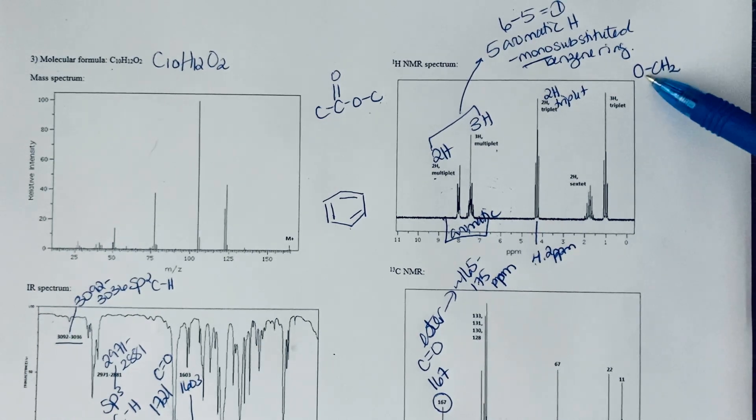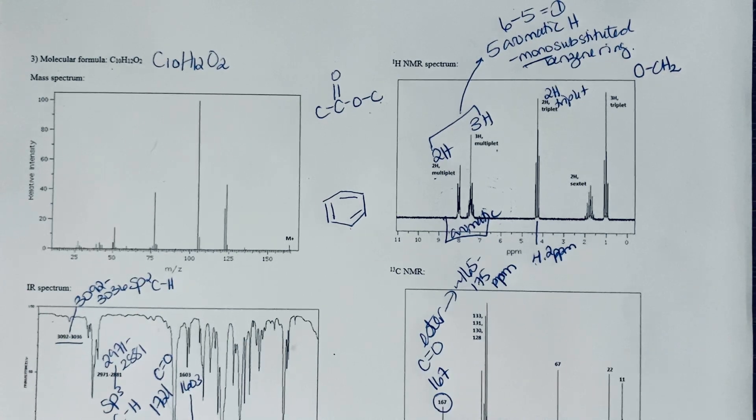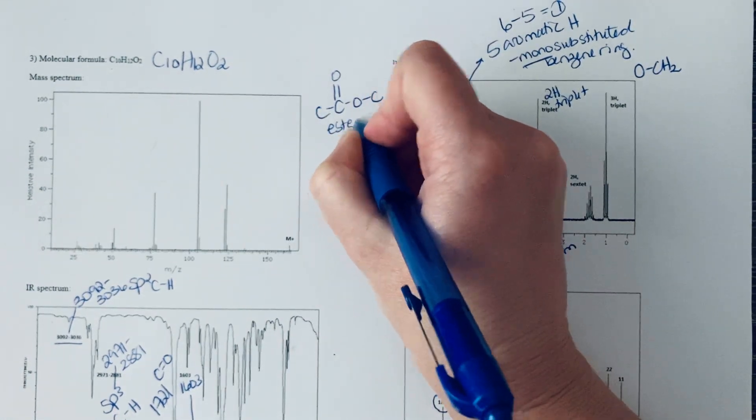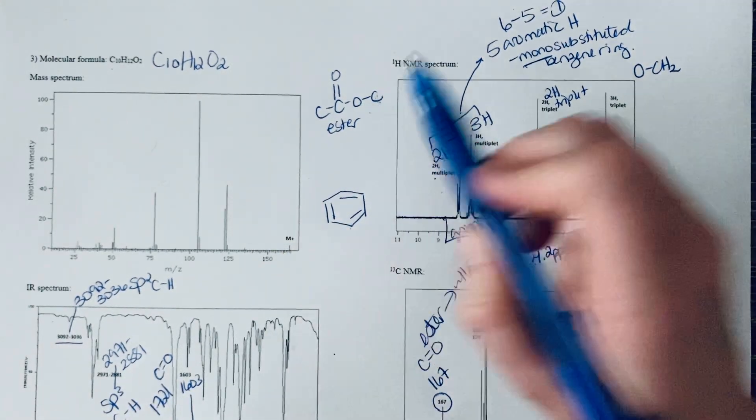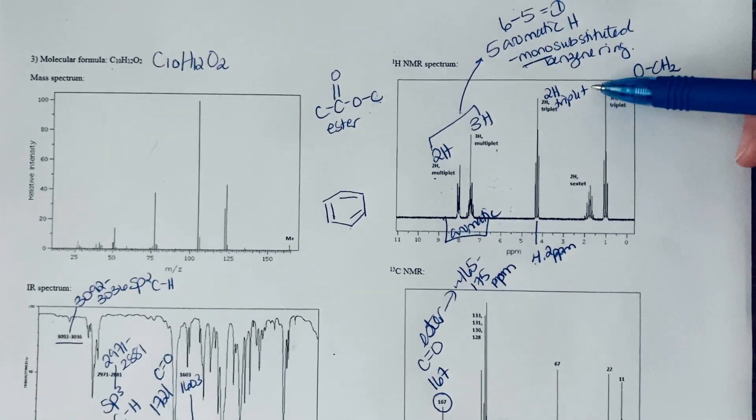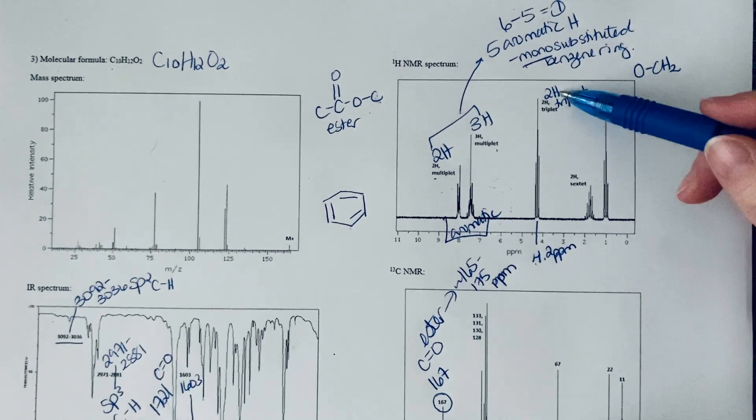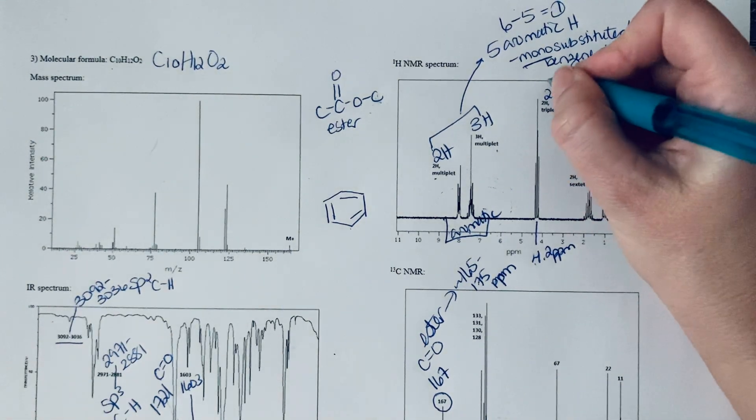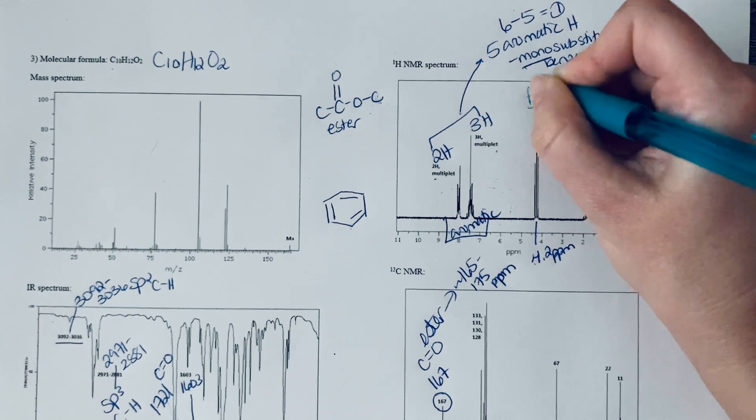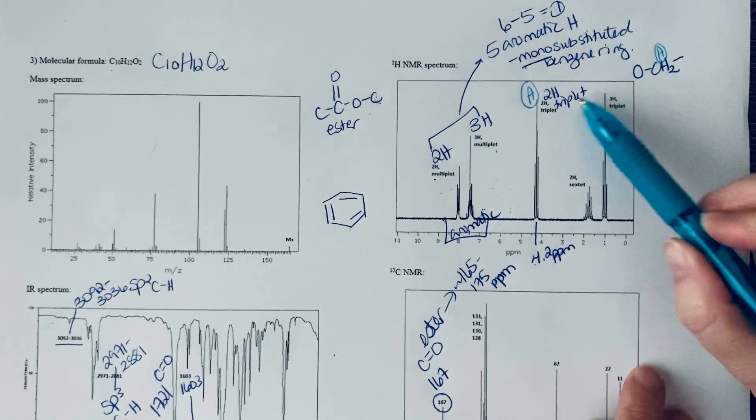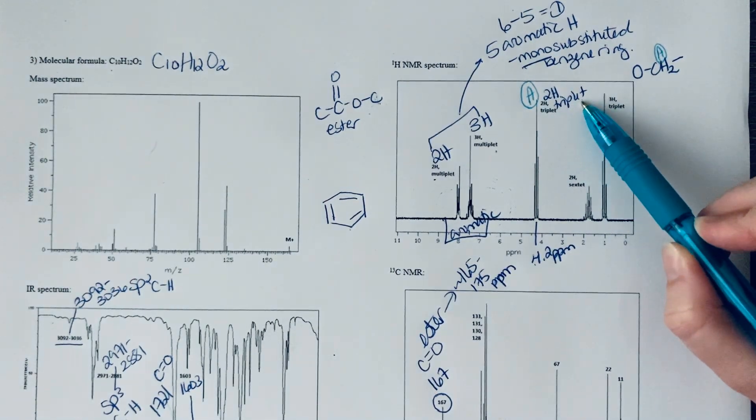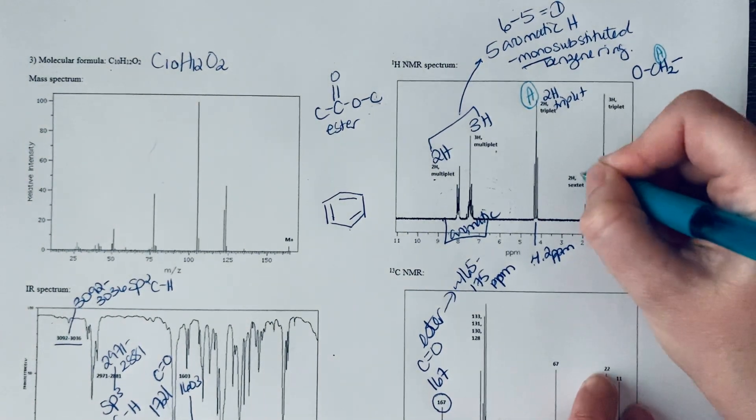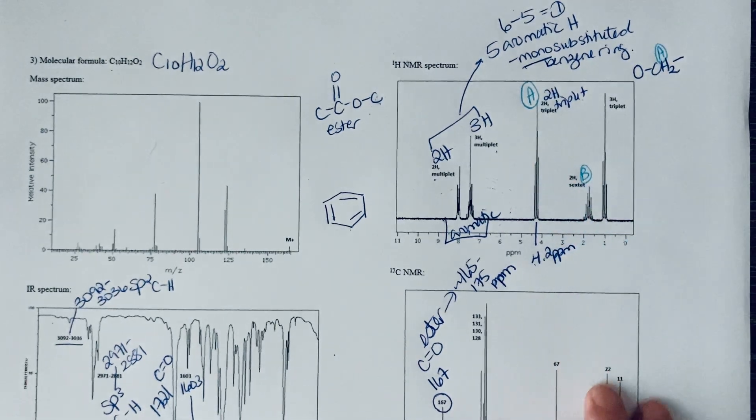This two hydrogen triplet looks like a CH2 fragment. Because there's two hydrogens, I'm attaching it to the oxygen because with a chemical shift of 4.2 I know it's attached to something electronegative. A triplet means that it sees two hydrogens, so most likely what's next door to this is another CH2 because that would give us n equals two for two neighbors. We do indeed have a peak that is another CH2.